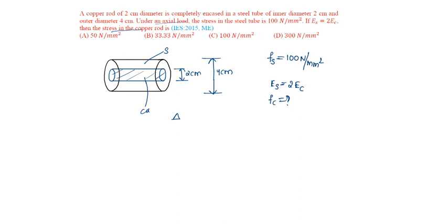We know elongation in copper should be equal to elongation in steel. That is Fs into length of steel by Young's modulus of steel is equal to Fc into length of copper by Young's modulus of copper.